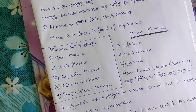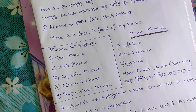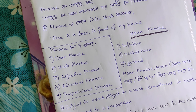Let's look at a noun phrase example. 'In front of my house' — this is a phrase. 'There is a tree in front of my house.' Here, 'in front of my house' is the phrase.